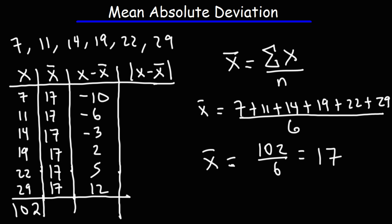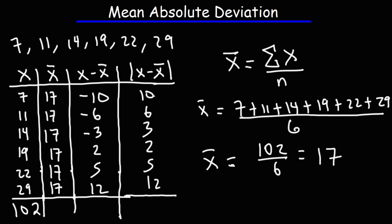In the last column we're going to take the absolute value of the difference column, so all the negative numbers will become positive. And then we're going to take the sum of this column — 10 plus 6 plus 3 plus 2 plus 5 plus 12 is 38.